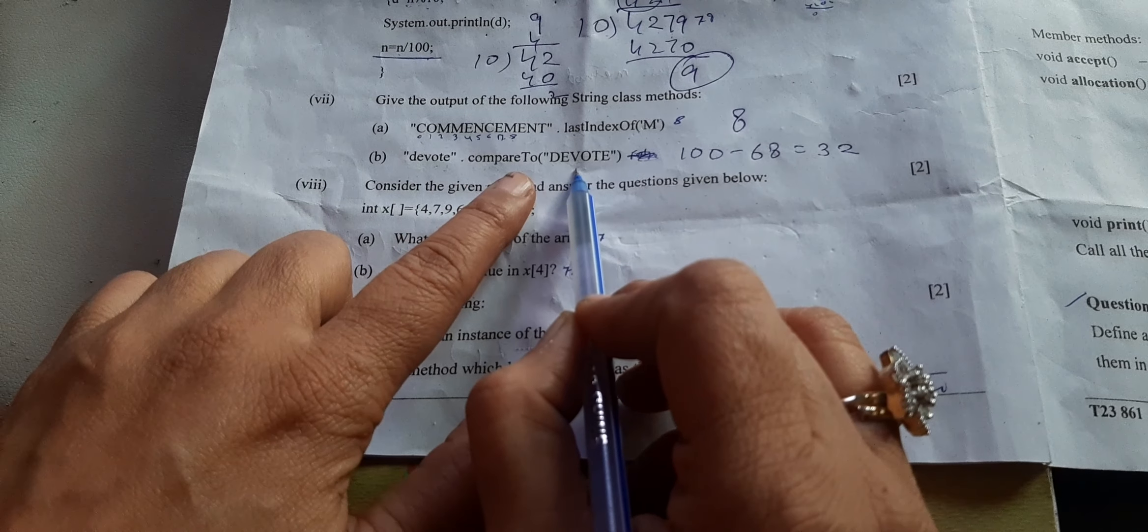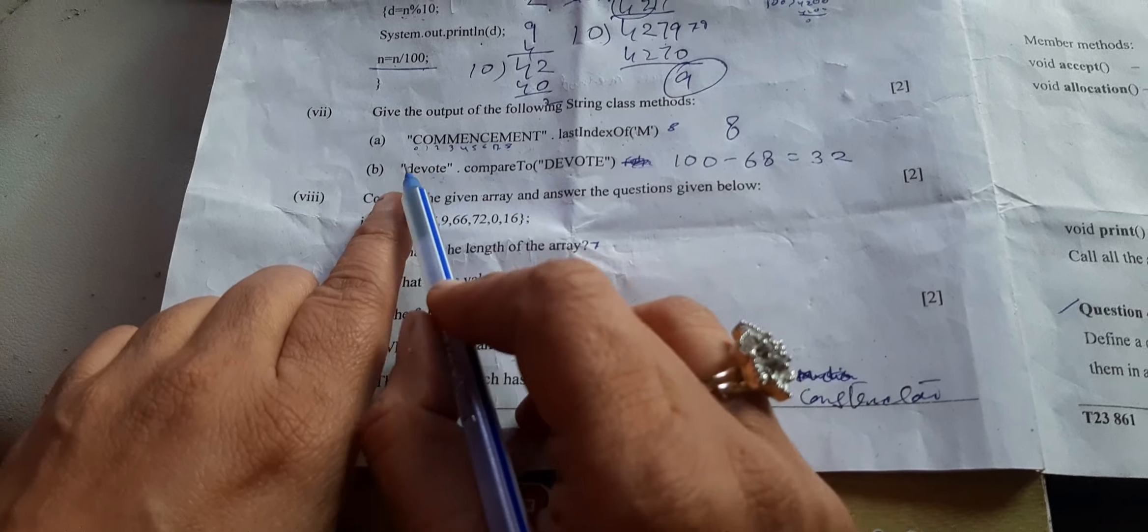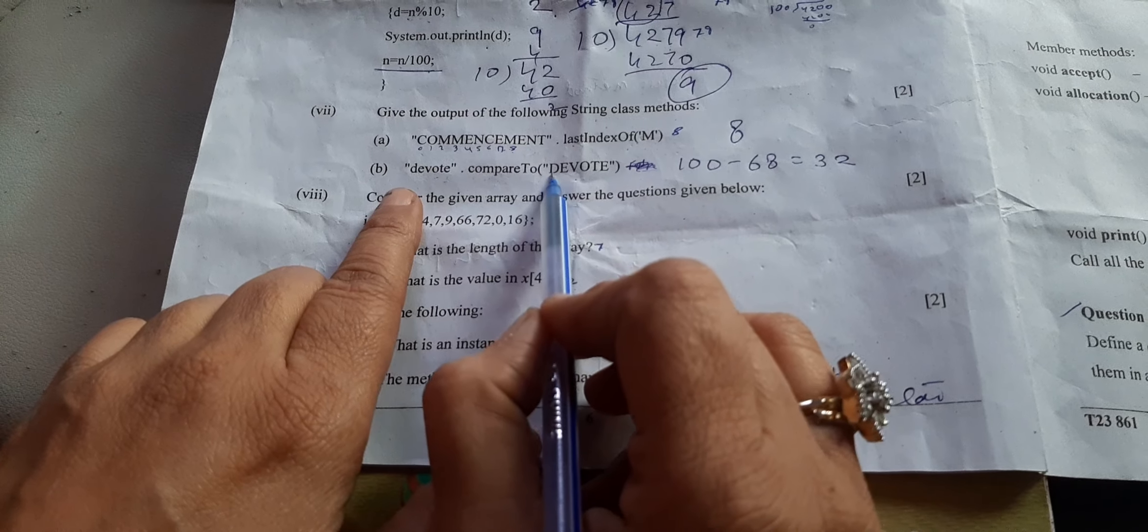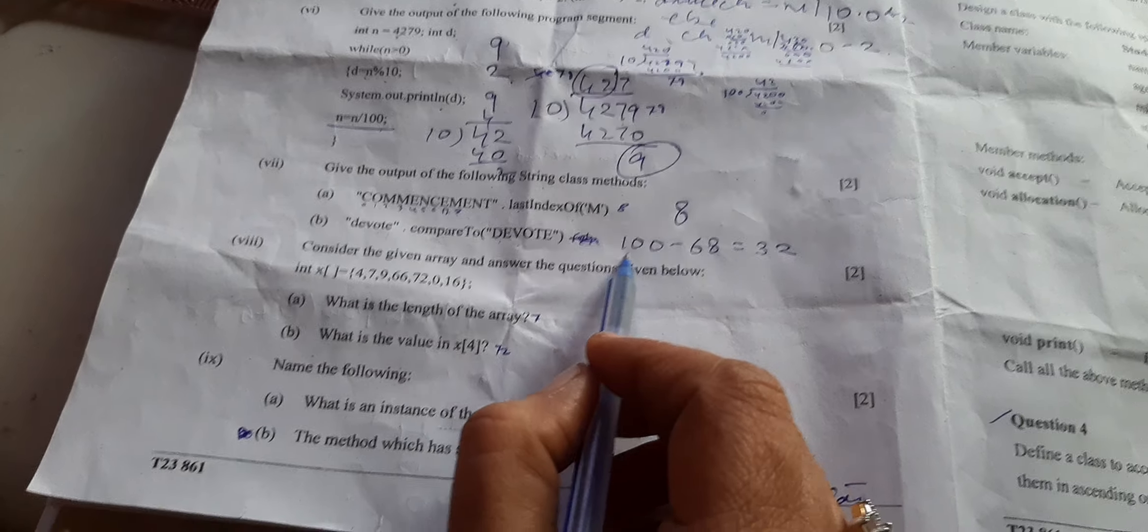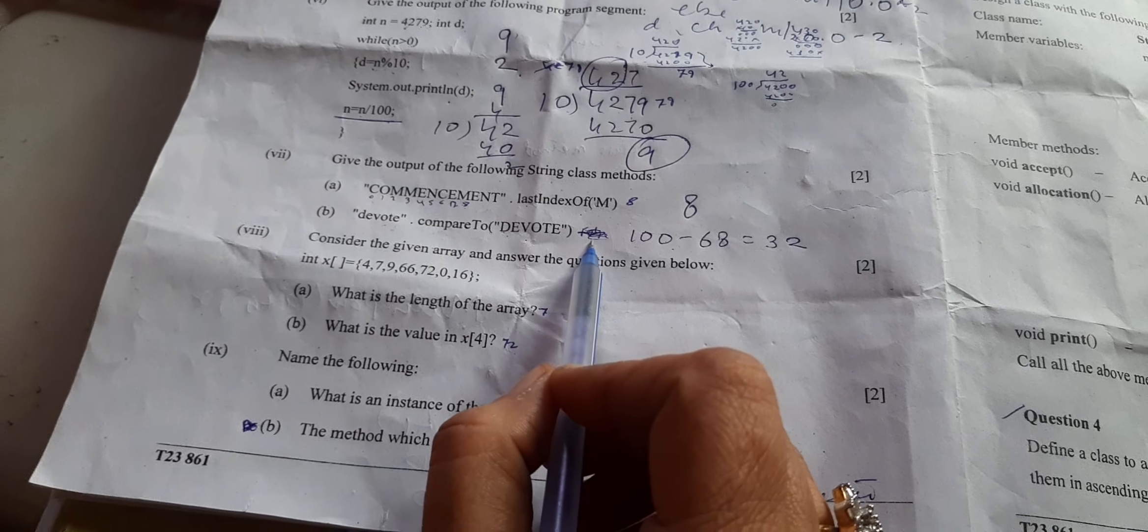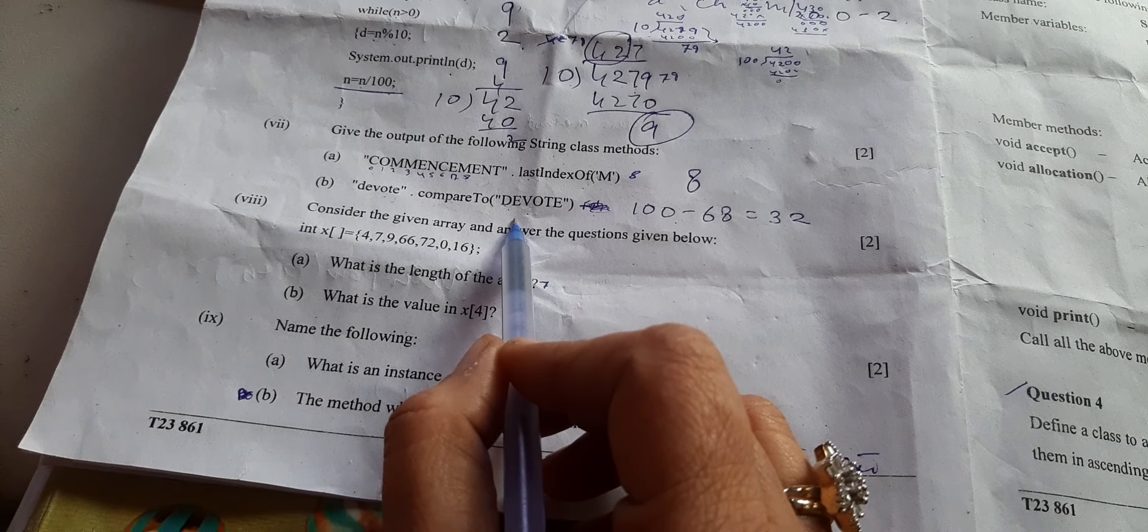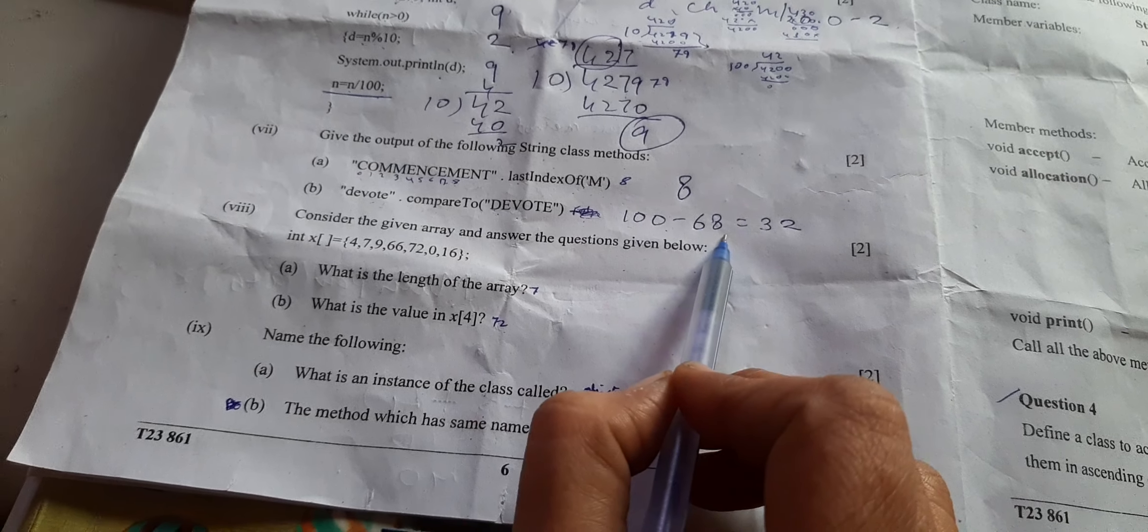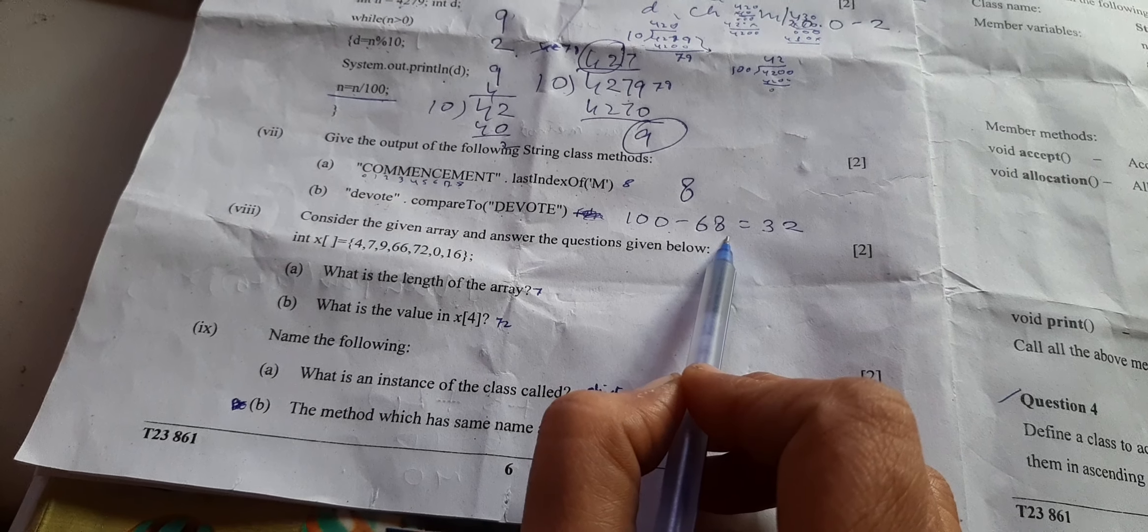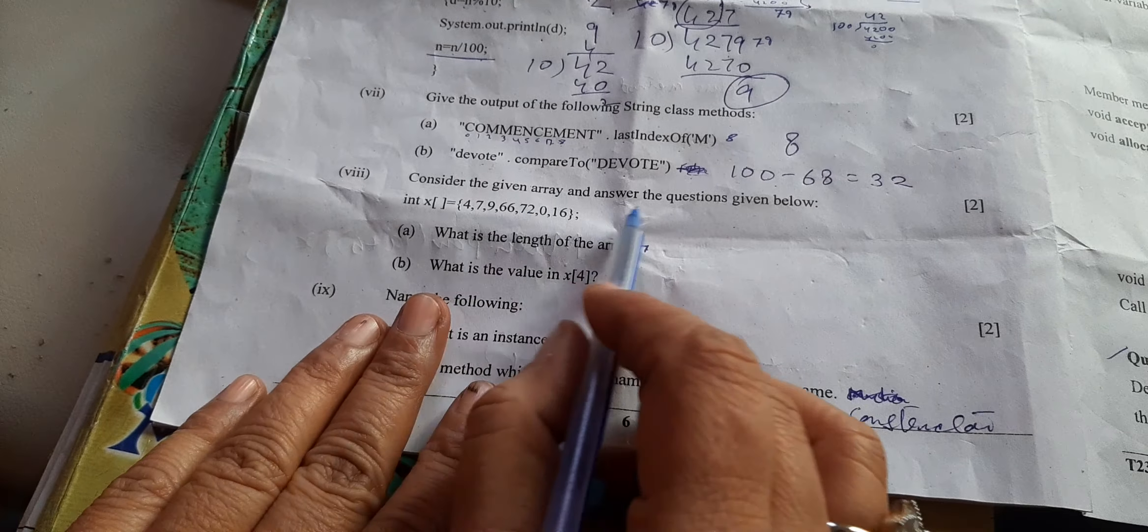compareTo function checks each character with the ASCII code. Where it finds the difference, it gives the difference of ASCII value. Now capital D and small d value is 100, because small values start from 97 to 122, and capital start from 65 to 90 ASCII value. Small d value is 100, and capital D value is 68. There is a basic difference between uppercase and lowercase of 32. So this is the answer.